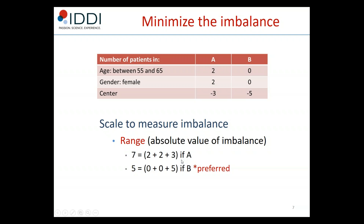The goal of minimization is to minimize the total imbalance on some scale. The first approach is the range method, which uses the absolute value of the imbalance. For treatment A, that's 2 + 2 + 3 = 7. For group B, it's 0 + 0 + 5 = 5. In this case, treatment B would be preferred.